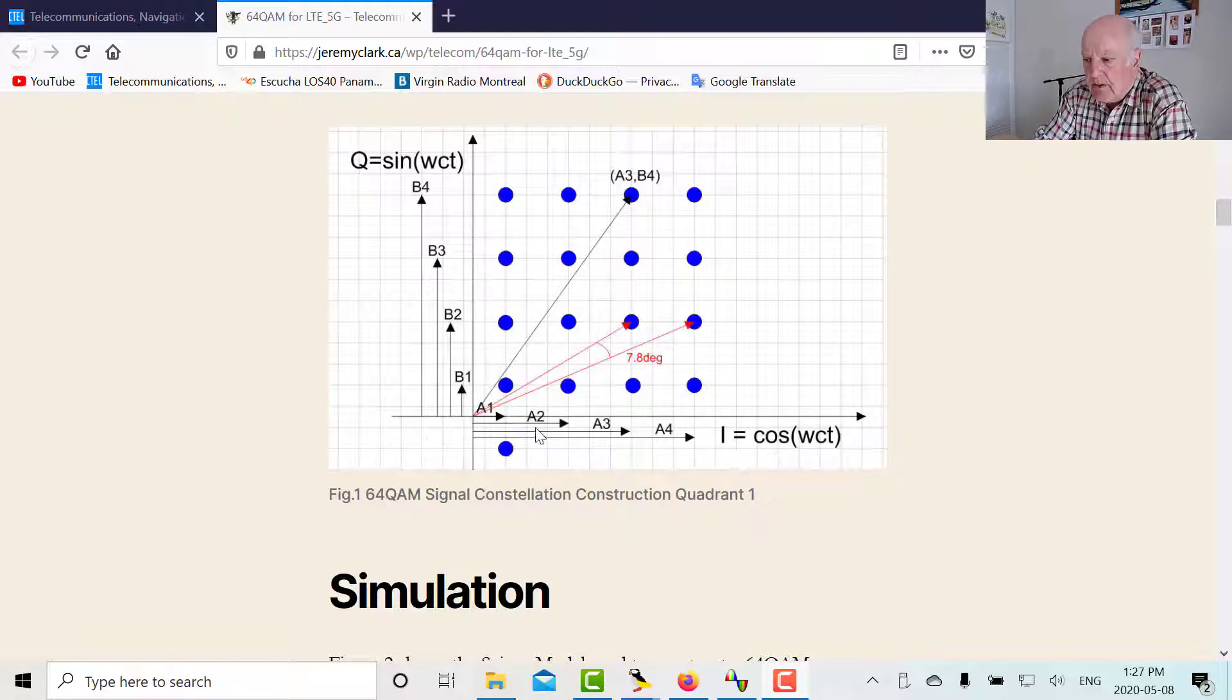In the I direction we're going to have one, two, three, four. We're going to have four different possible amplitudes. Of course, in quadrant 2 we could have minus those values. And then in the positive direction on the quadrature side we've got four different amplitudes for B.